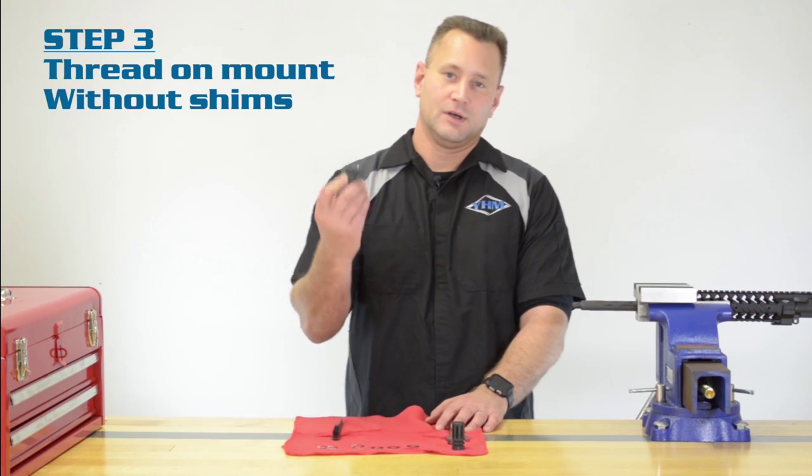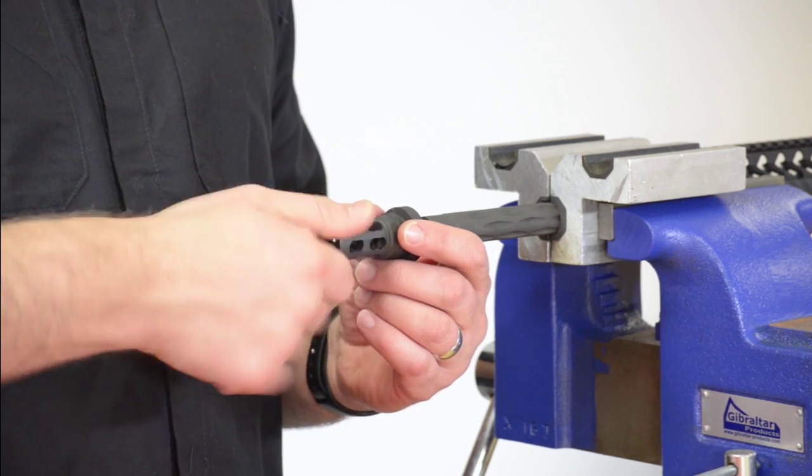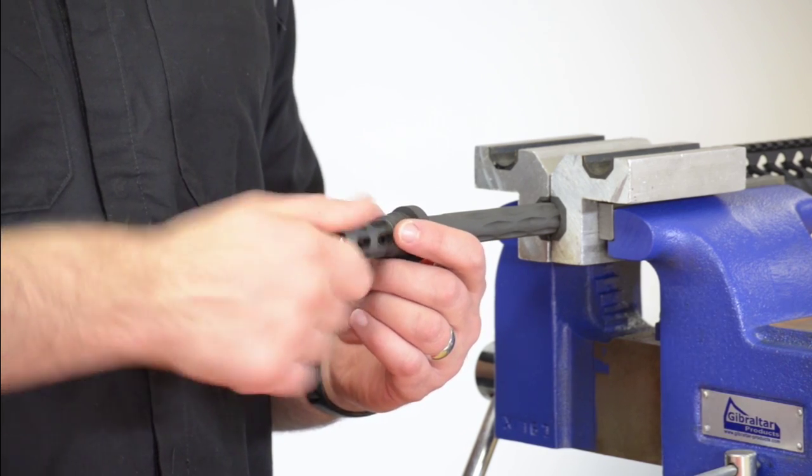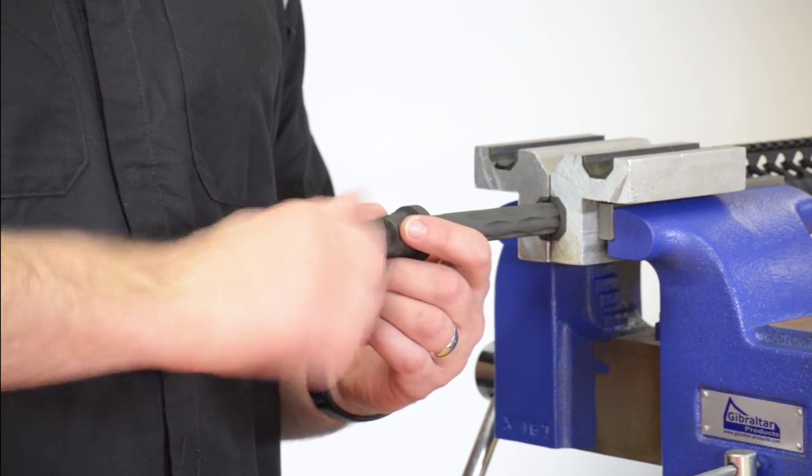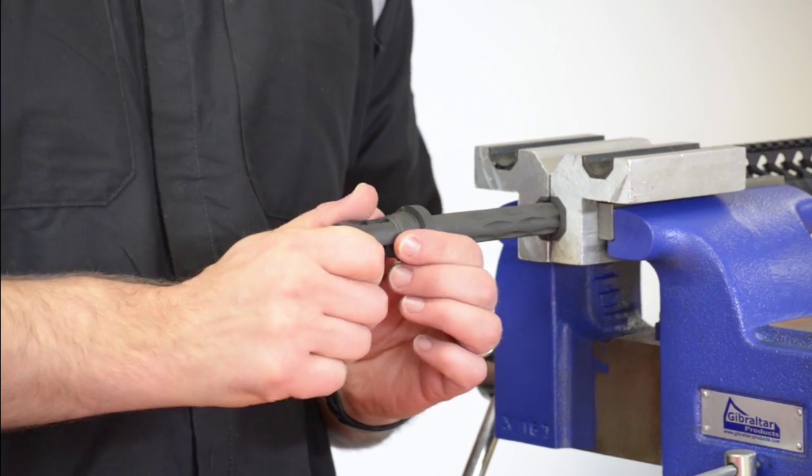Step three, by hand thread on your new YHM QD muzzle brake until it gets all the way to the shoulder behind the threads and won't go any farther.